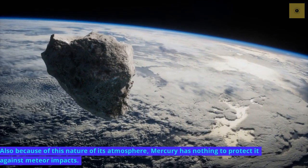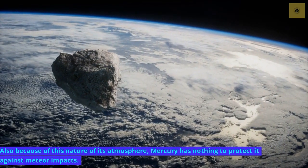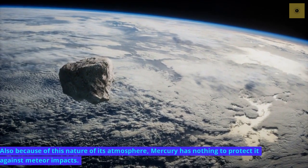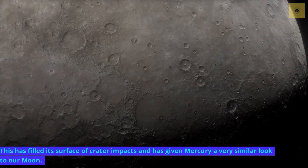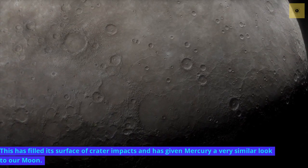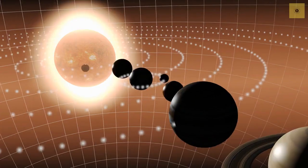Also because of this nature of its atmosphere, Mercury has nothing to protect it against meteor impacts. This has filled its surface with crater impacts and has given Mercury a very similar look to our Moon.